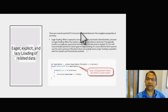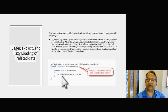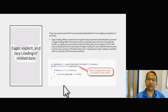We'll be learning about three types of loading of related data: eager, explicit, and lazy loading. There are several ways that EF Core can load related data into the navigation properties of an entity or table. Eager loading is when a query for one type of entity also loads related entities. When the entity is read, its related data is retrieved, typically resulting in a single join query. EF Core specifies eager loading with the Include and ThenInclude methods.